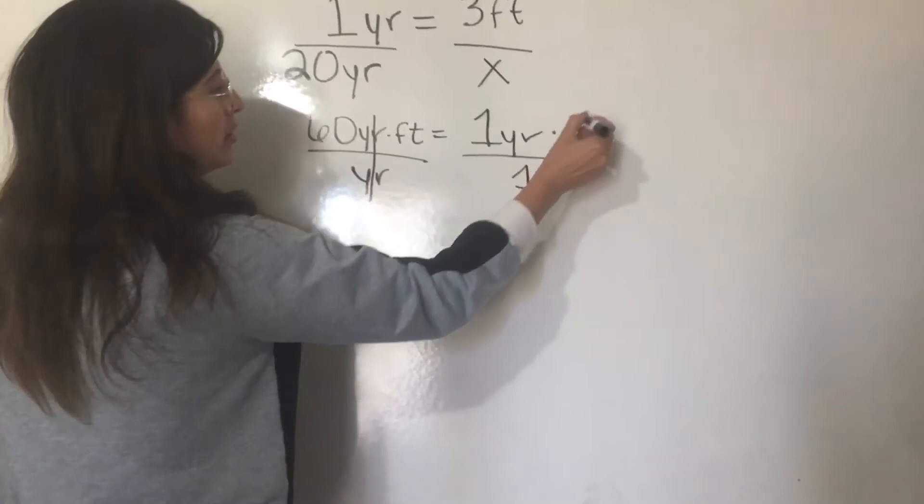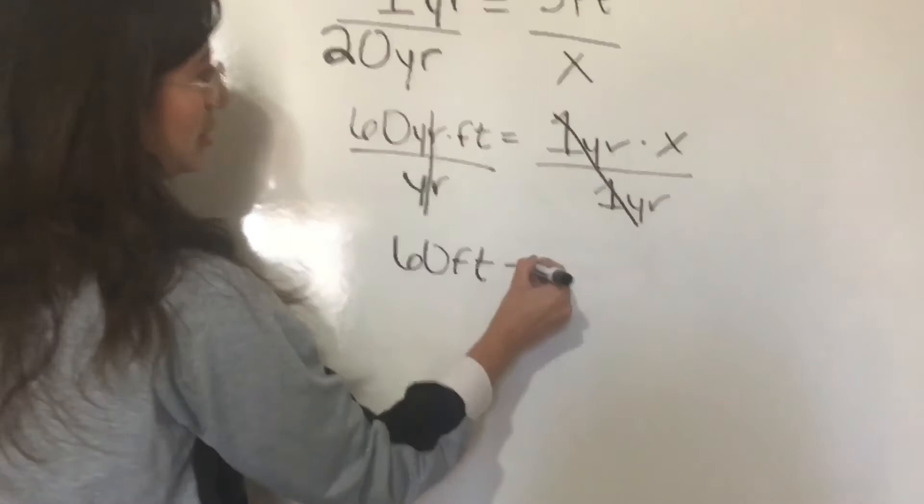And this cancels out. And you're left with 60 feet equals X. So, 20 yards equals 60 feet.